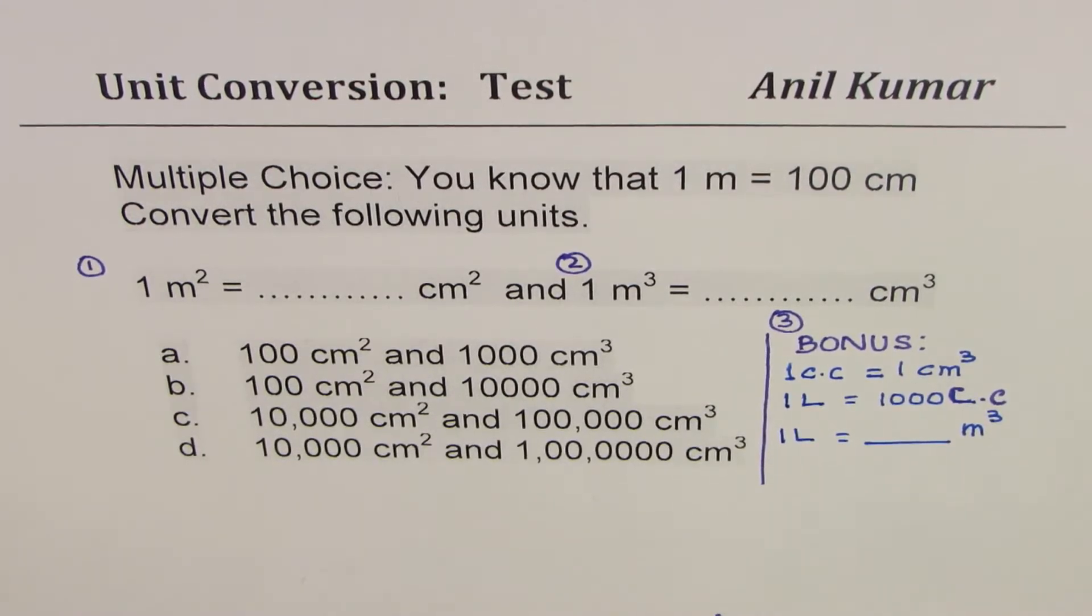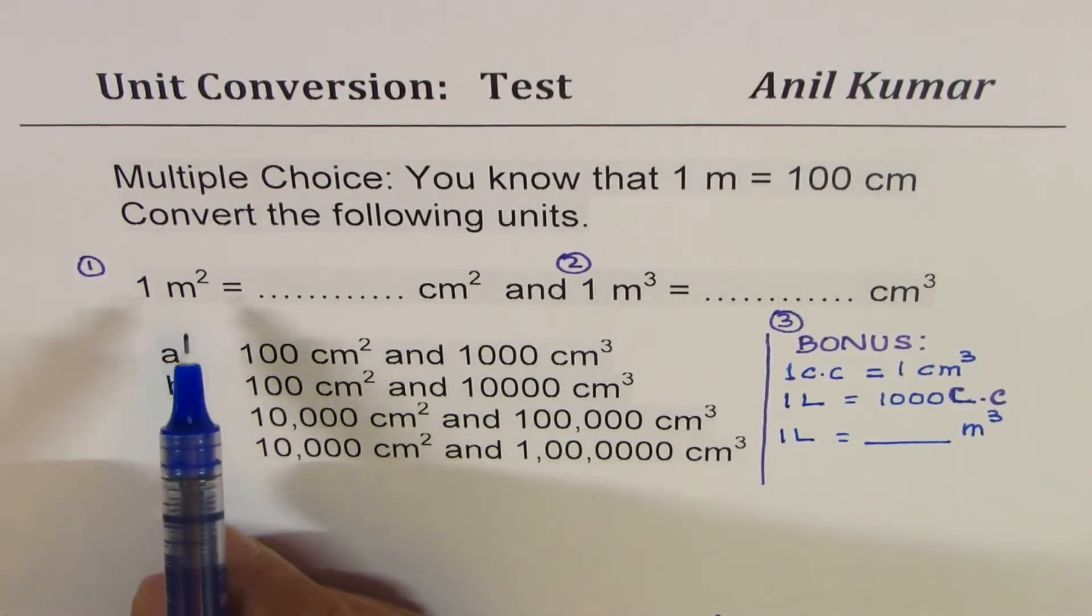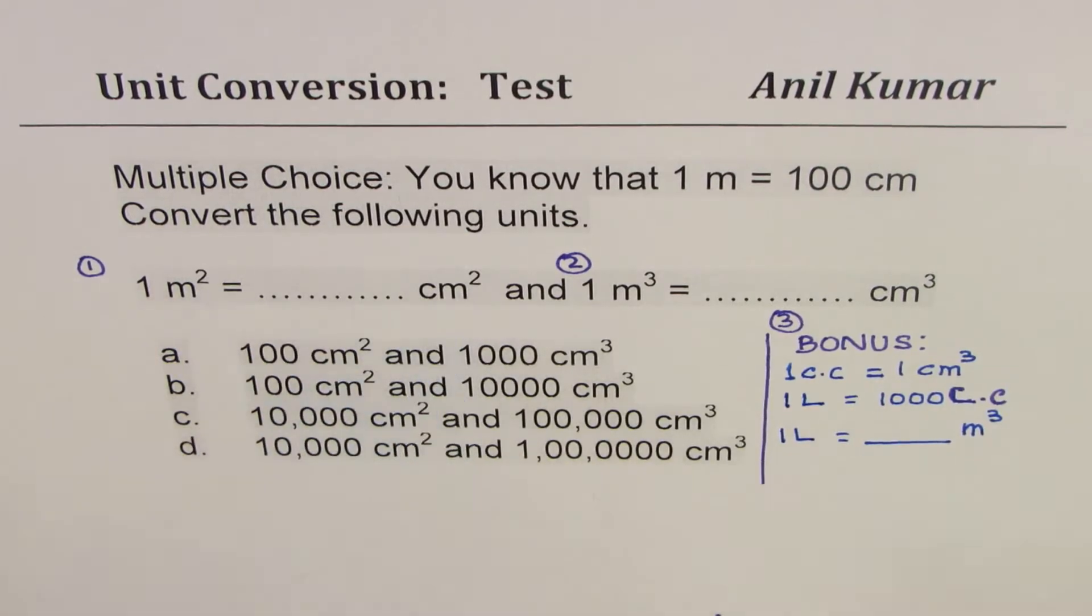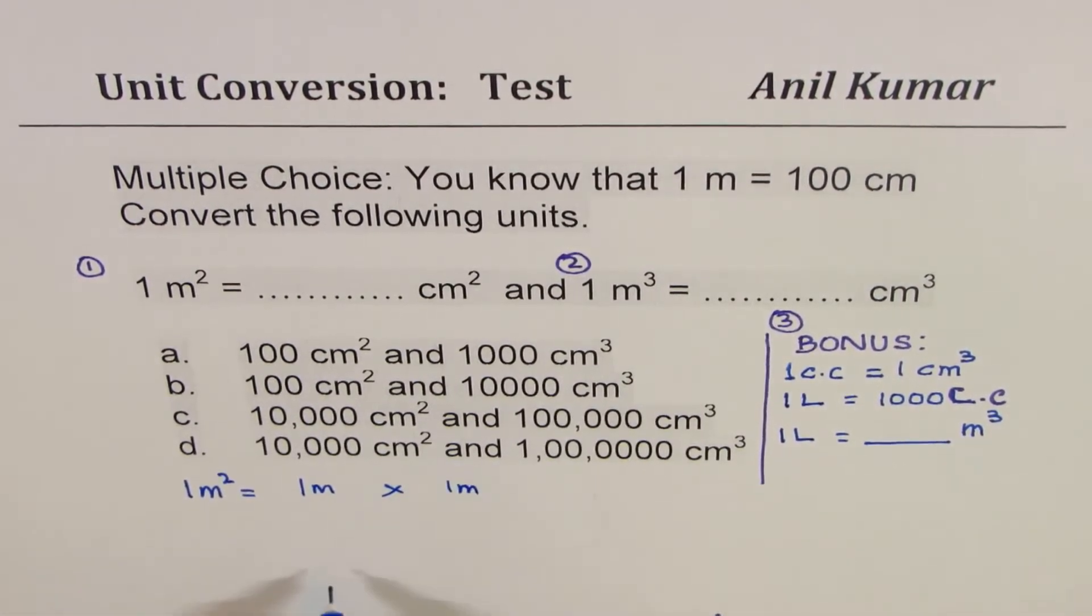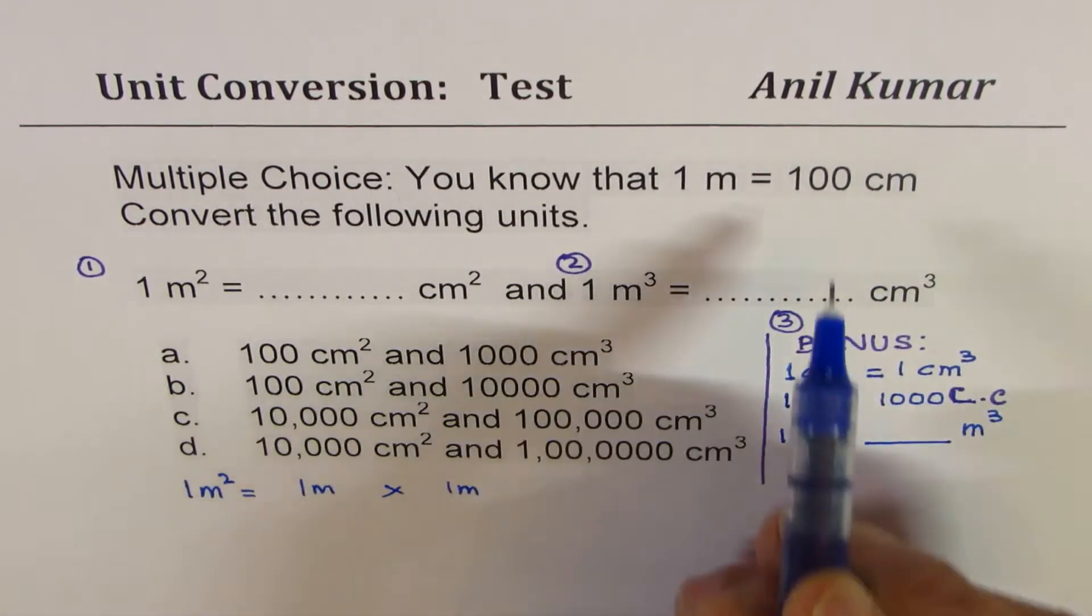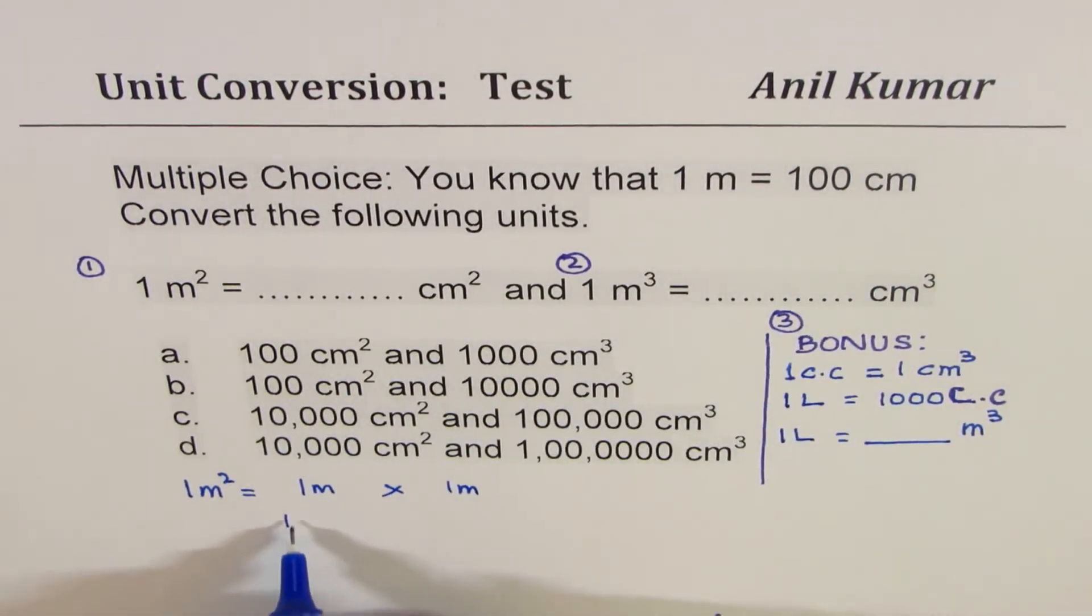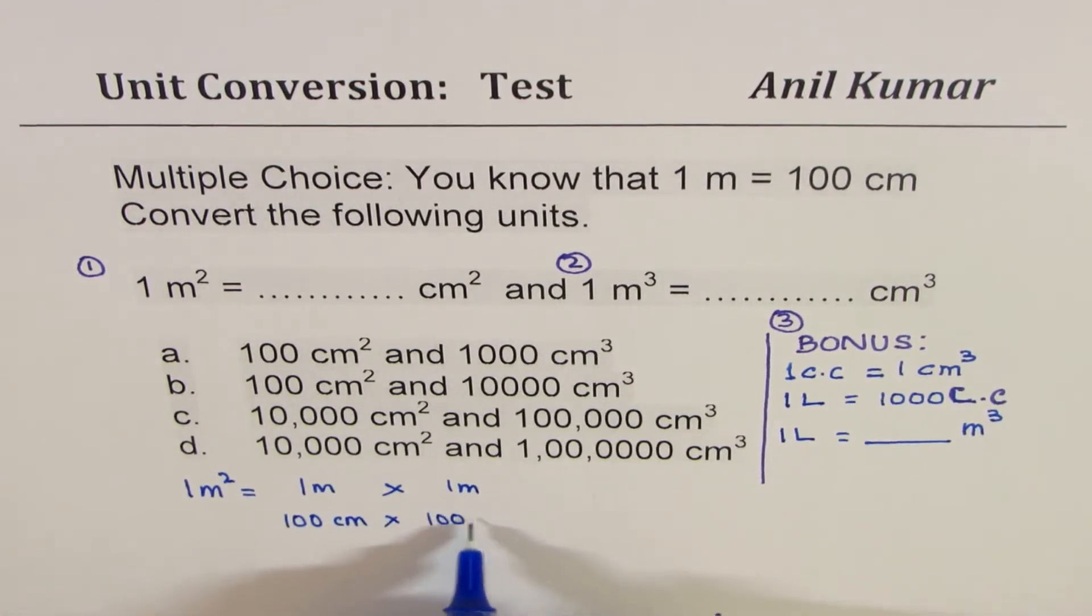So let us see how to solve such a question. I hope you got your answers. Now here is my solution. Let me convert meter square to centimeter square. One meter square really means I'm multiplying one meter by one meter. Now one meter, as you know, is hundred centimeters. So I'll multiply hundred centimeter by hundred centimeter.